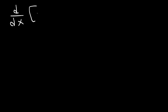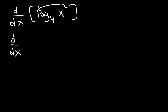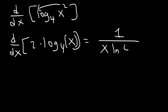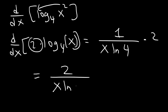Here's another example: differentiate log base 4 of x squared. We can move the 2 to the front, so this is 2 times log base 4 of x. Using the formula, u prime is the derivative of x which is 1, divided by u which is x, times ln a which is ln 4, and there's a 2 in front. So the final answer is going to be 2 over x times the natural log of 4.